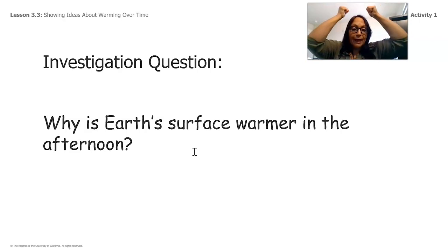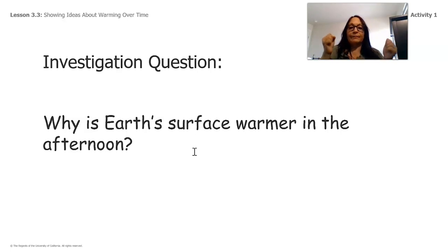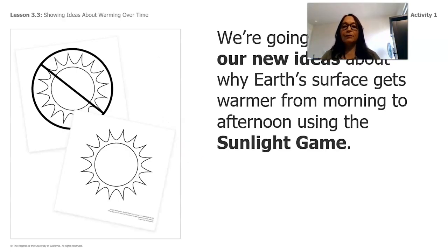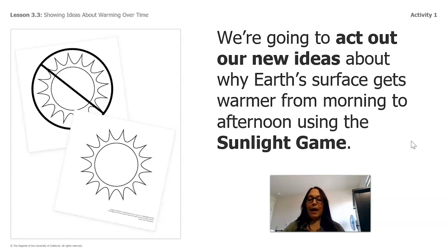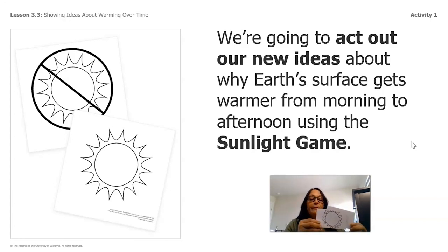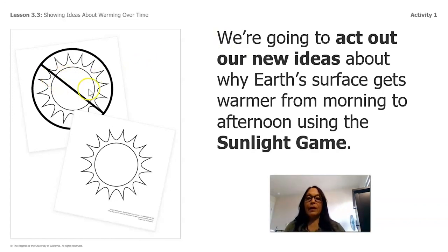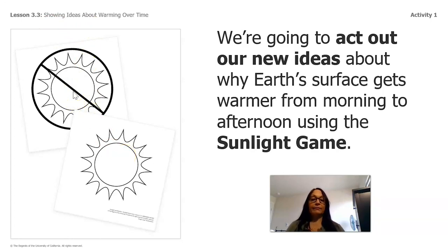Let's put our thinking caps on and start thinking, imagining, predicting, and investigating. Our game is called the sunlight game. I'm going to have a sun card and another card that means no sun — you can see the line through it, which means no. So we're thinking about sunlight and no sunlight.